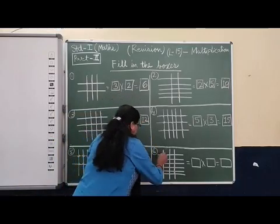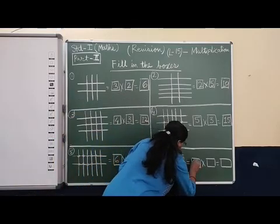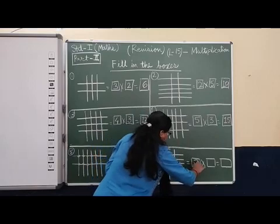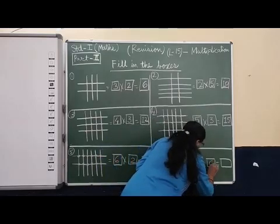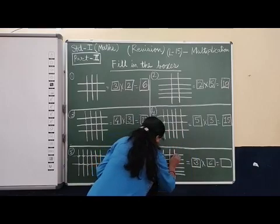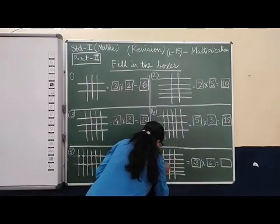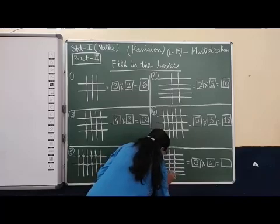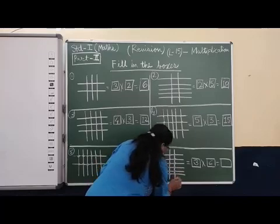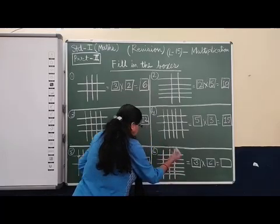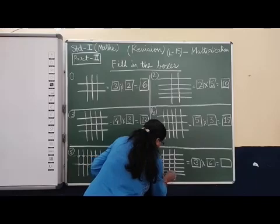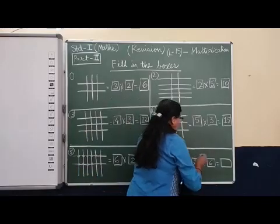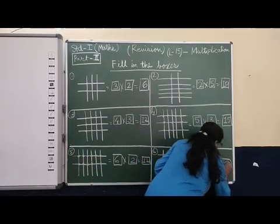Same way, last one. Count standing lines — one, two, three. Table of three. How many times? Count sleeping lines — one, two, three, four, five, six. Now put dots and count. Let us come once again — one, two, three, four, five, six, seven, eight, nine, ten, eleven, twelve, thirteen, fourteen, fifteen, sixteen, seventeen, eighteen. So we have put eighteen dots here. The answer will be eighteen. So three sixes are eighteen.